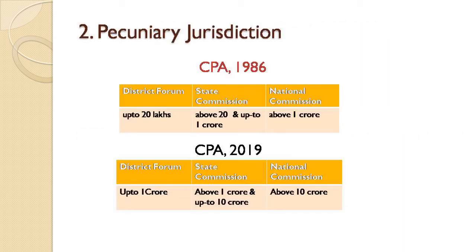The second change is pecuniary jurisdiction. Under the Consumer Protection Act 1986, to file a case in the district forum, the value of goods and services had to be up to ₹20 lakhs. If the value was above ₹20 lakhs up to ₹1 crore, it went to the state commission; and above ₹1 crore, to the national commission. But now, under the 2019 Act, if the value is up to ₹1 crore, it goes to the district forum; above ₹1 crore and up to ₹10 crore goes to the state commission; and above ₹10 crore goes to the national commission.